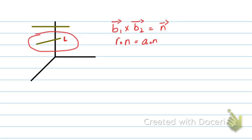So the other line needs to be parallel to the plane. You cross the two direction vectors, you get normal and simply r dot n equals a dot n to find out the equation of the plane.